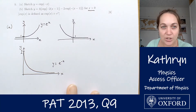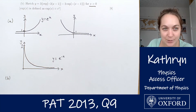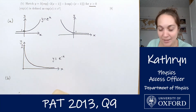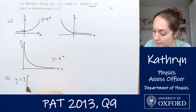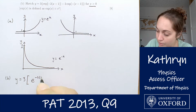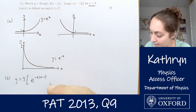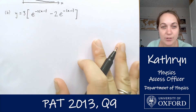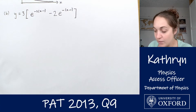Onto part b then, which is quite a bit more complicated. But we're not going to get daunted by it — we're just going to break it down into different steps and sections. The first step is trying to make head or tail of what this expression with all the brackets is. So I'm going to rewrite it as e to the power something, because I find it easier to see what's going on. So we've got y equals three times e to the minus two times (x minus one), minus two times e to the minus (x minus one). That's our expression that we're trying to draw a graph of.